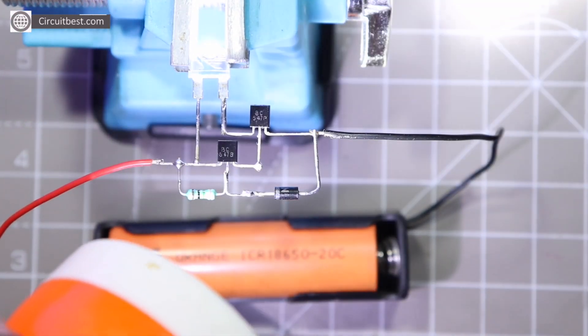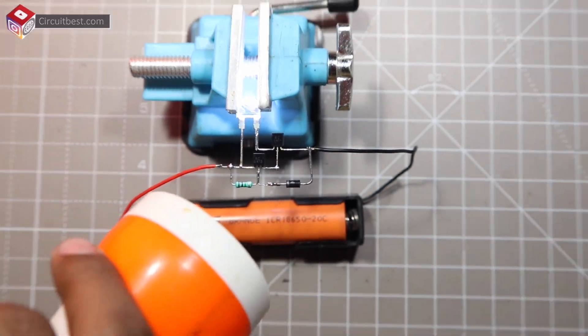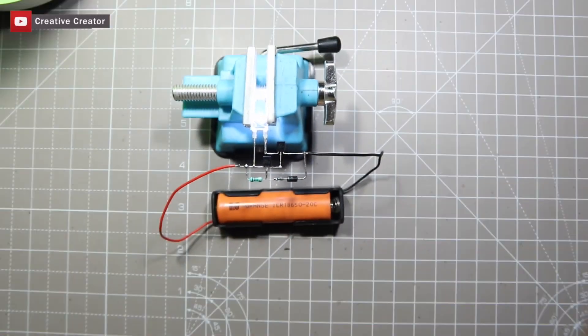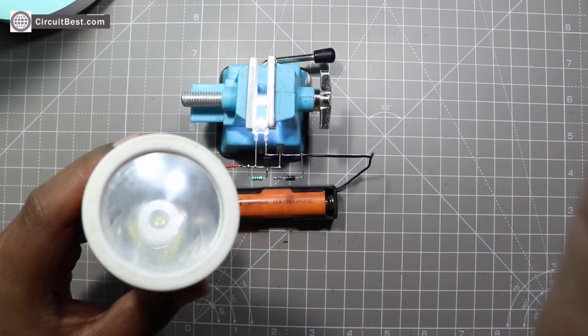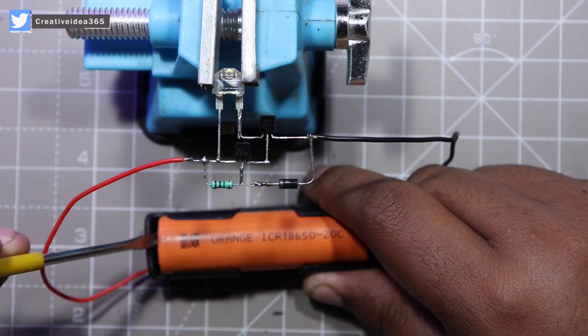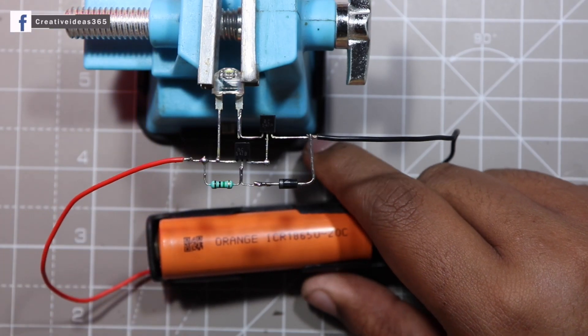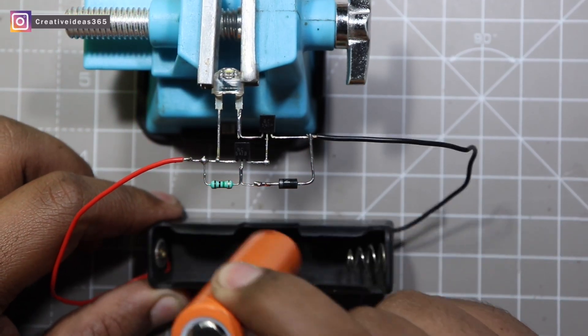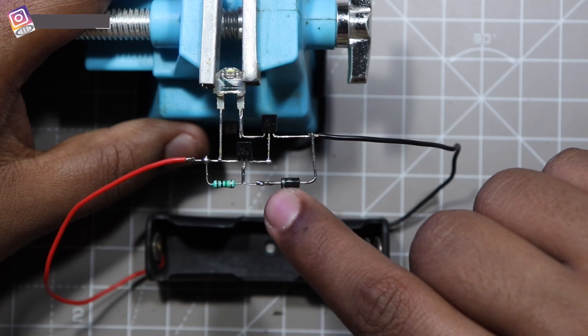Obviously it will not work because the general diode is not photoreactive, so we have to make some physical changes to the diode for being photoreactive. So let's unplug the battery first and then break this diode.